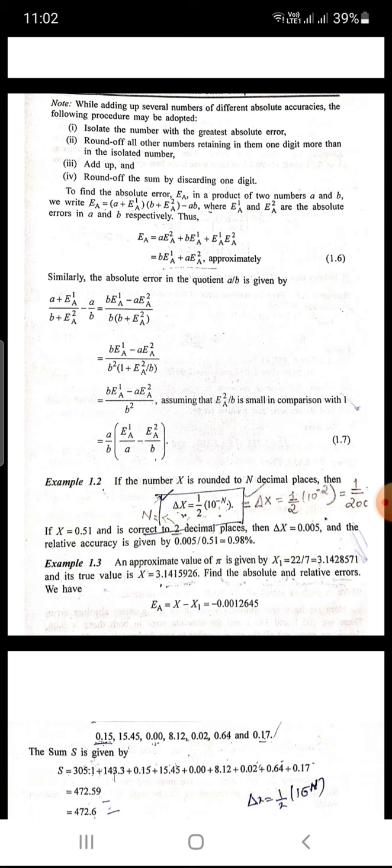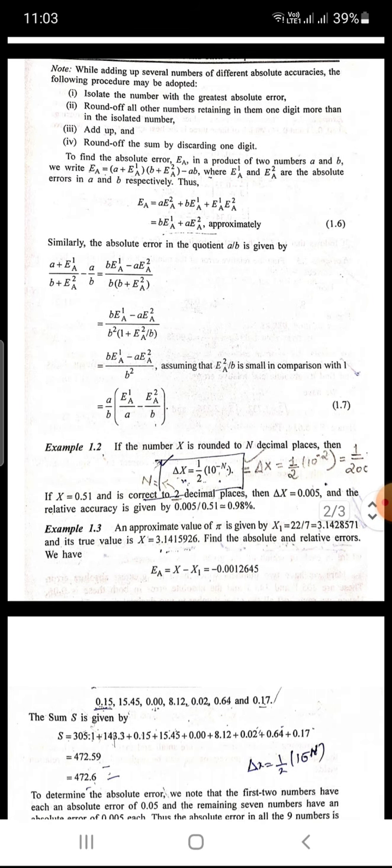This will be equal to b e1a plus a e2a. Similarly, the absolute error in the quotient a upon b is given by (a plus e1a) upon (b plus e2a) minus a upon b.